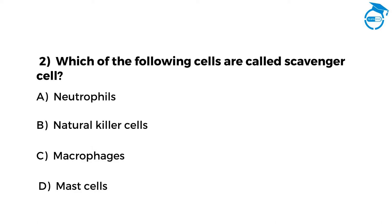Which of the following cells are called scavenger cells? Option A: neutrophils. Option B: natural killer cells. Option C: macrophages. Option D: mast cells.